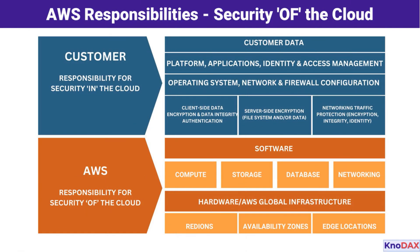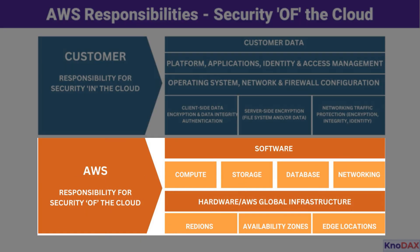Let's start with AWS. AWS is responsible for the security of the cloud. This includes managing and securing the infrastructure that runs all AWS services. Think of it as the foundation and framework covering physical infrastructure like data centers, hardware, and environmental safeguards; global network and regional availability zones ensuring high availability and resilience; and managed software such as the compute, storage, database, and networking layers. AWS takes full accountability for maintaining and securing these resources, so you can focus on building within the cloud.